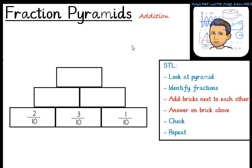Let's go ahead and look at our pyramid. We have some blank bricks at the top and the middle, and then we have fractions written on these bottom three bricks. Let's identify our fractions. We have two tenths, three tenths, and one tenth. They're all tenths. Common denominators.